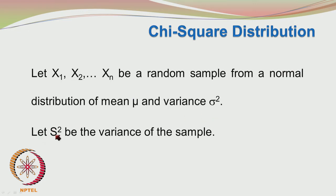We can calculate the sample variance S square once the sample is drawn. Until the sample is actually drawn, the sample is an abstract entity. We have a statistic S square defined based on x1, x2, so on to xn. These things we have covered in the previous classes.